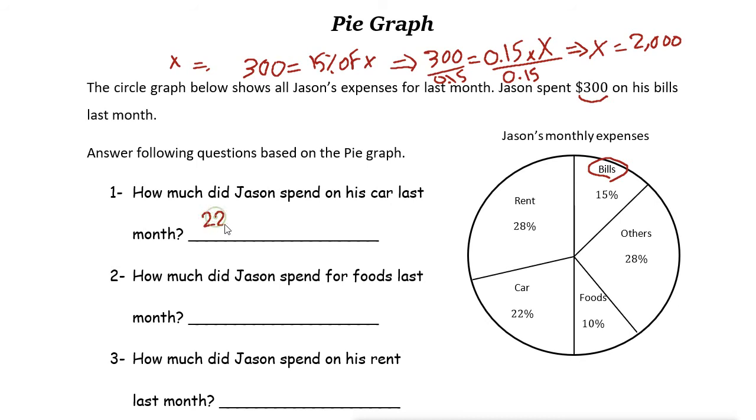If you write instead of percent just write 0.22 times 2000. So just use a calculator and multiply 2000 by 0.22.